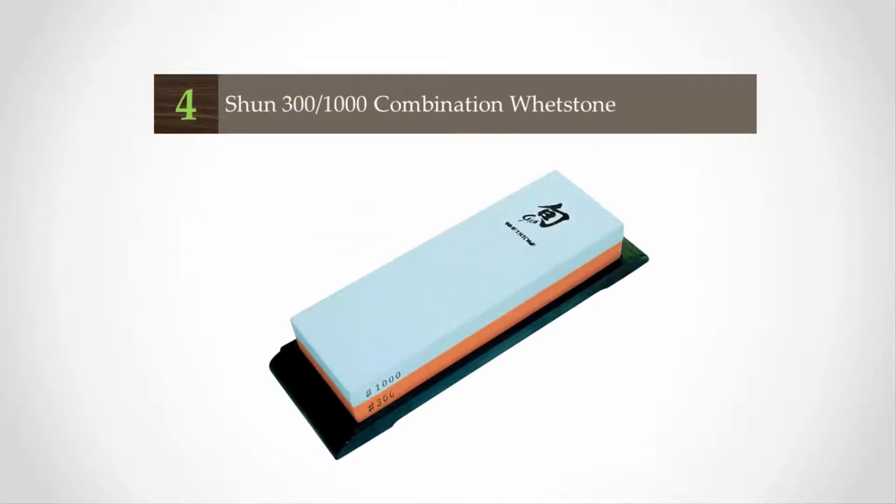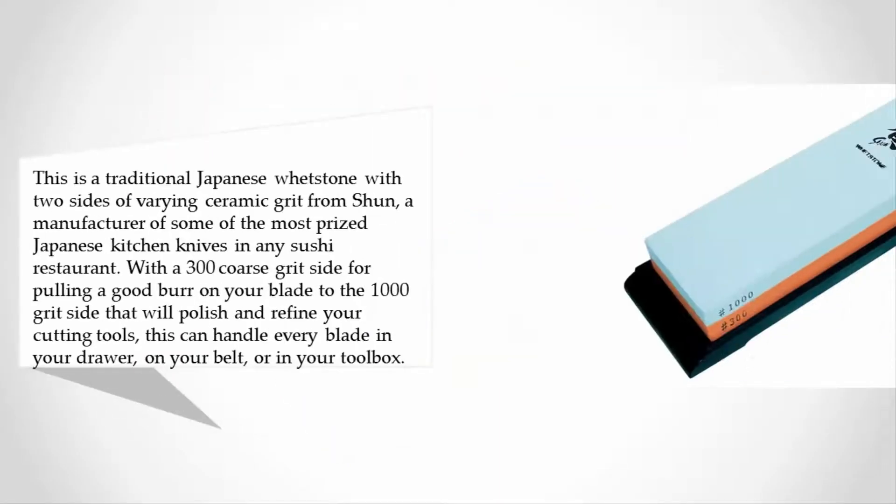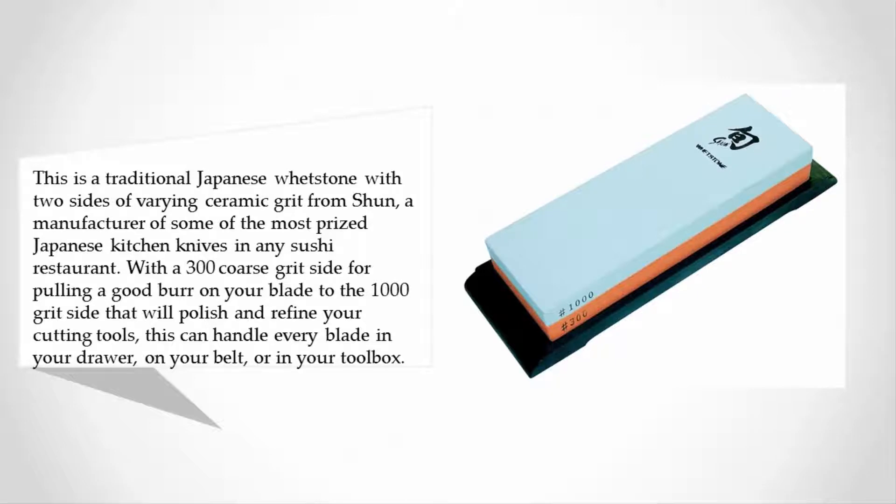At number four, this is a traditional Japanese whetstone with two sides of varying ceramic grit from Shun, a manufacturer of some of the most prized Japanese kitchen knives in any sushi restaurant. With a 300 coarse grit side for pulling a good burr on your blade to the 1000 grit side that will polish and refine your cutting tools, this can handle every blade in your drawer, on your belt, or in your toolbox.